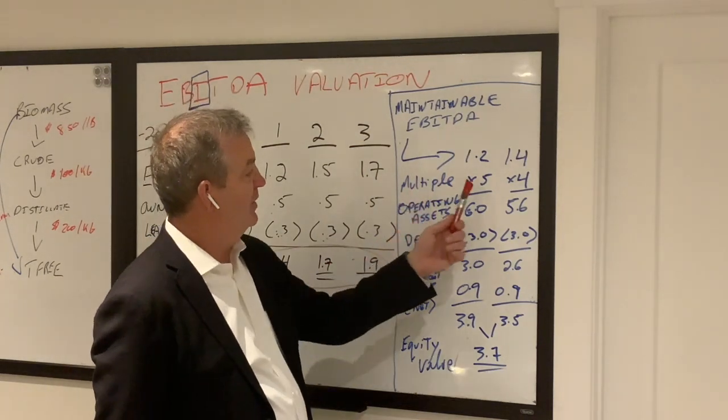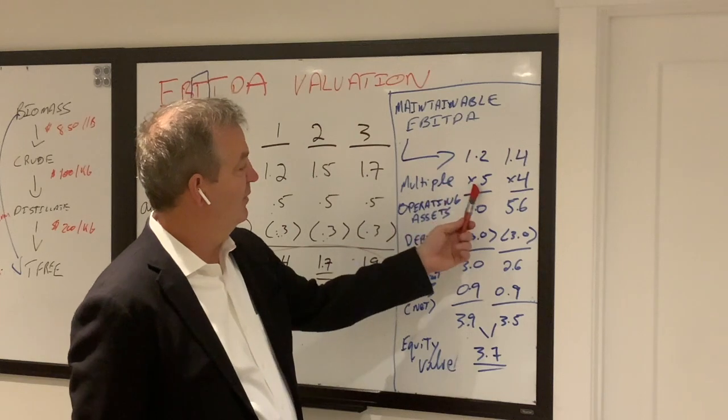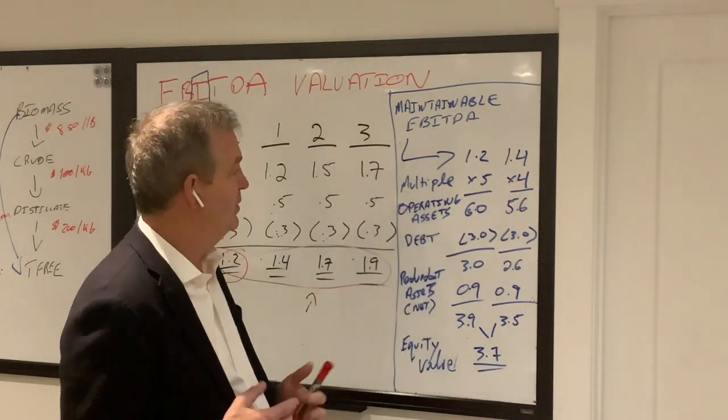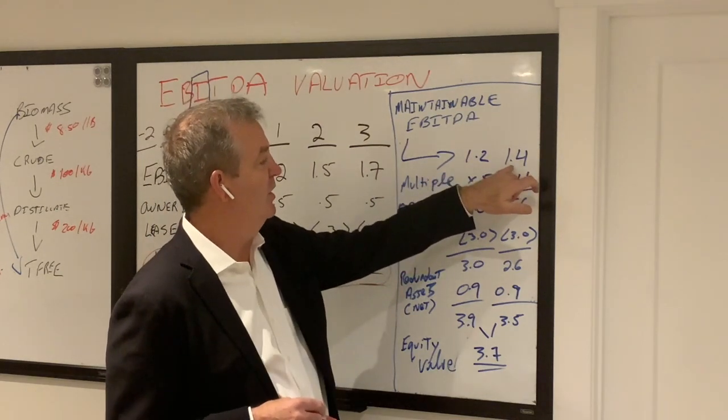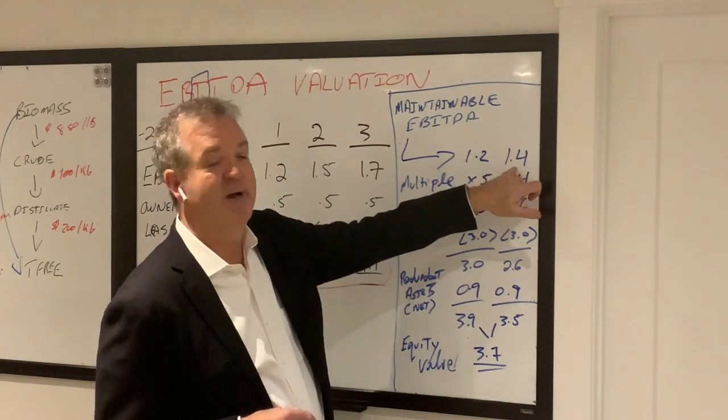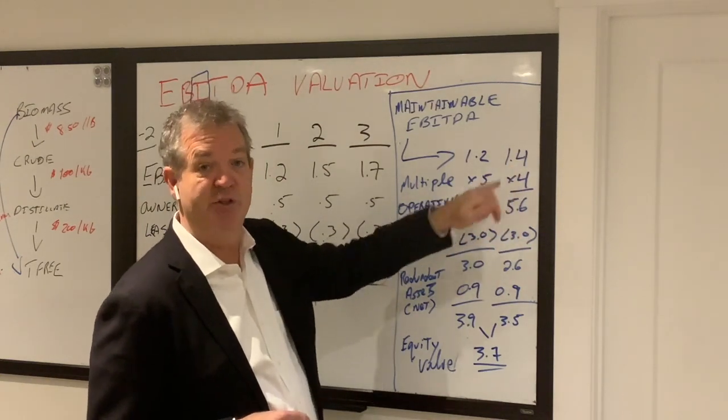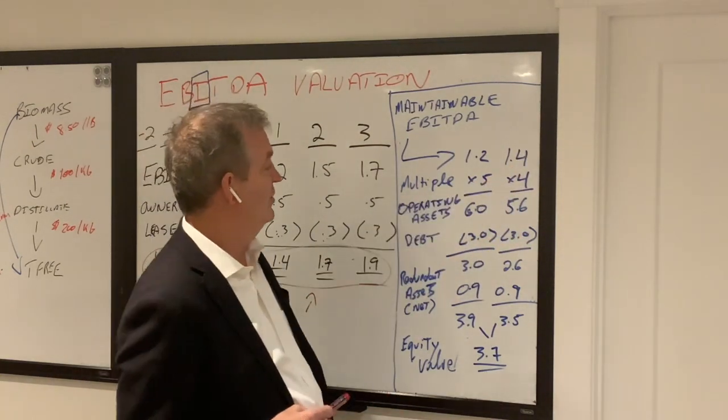You then apply a multiple to that. And I've chosen a multiple of five, I've chosen a multiple of four. And obviously there's some interplay here between what you choose as your maintainable EBITDA. So for example, if I put 1.8 here, I better put a pretty low multiple on that because it's a much riskier number.